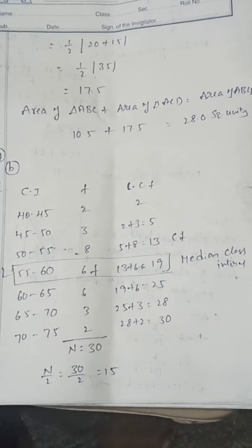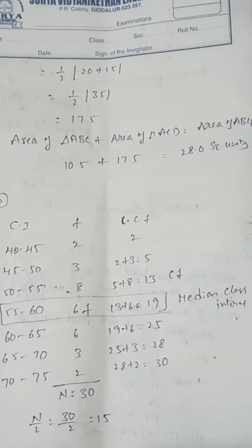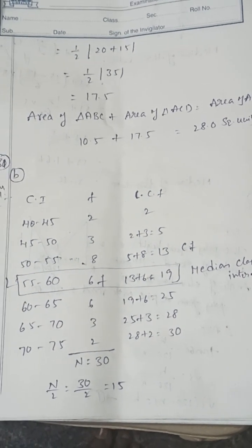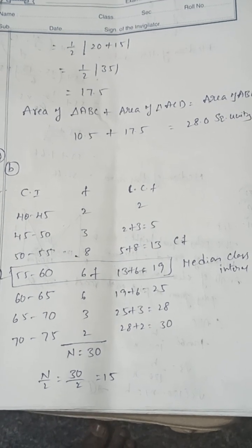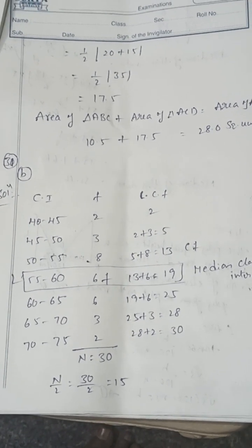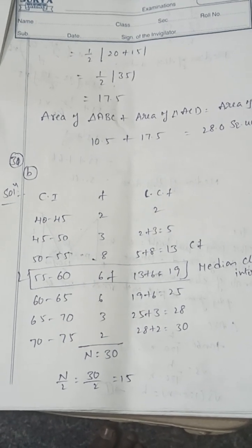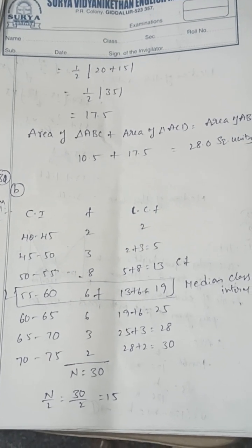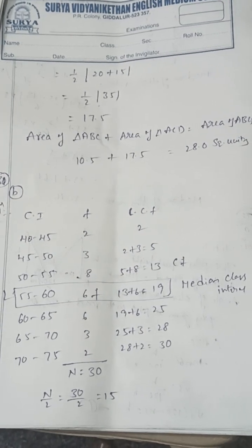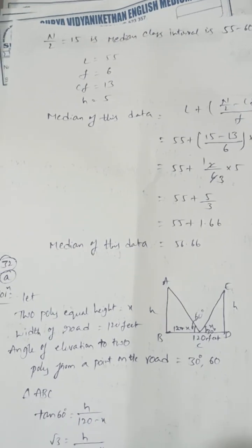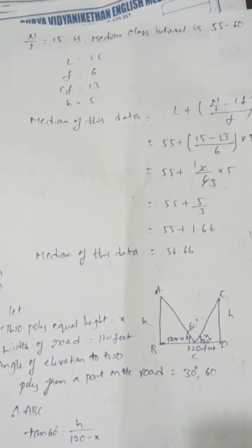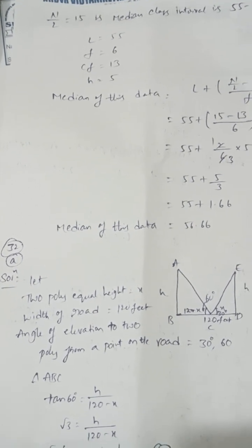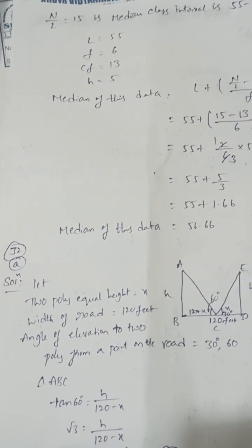Find the median. Draw the class interval and the less-than cumulative frequency (LCF). n/2 = 15; 15 falls after cumulative frequency 13, so the median class interval is 55–60. Using the formula: Median = L + [(n/2 − CF)/F] × H, where L = 55. The median of the data is 56.67.